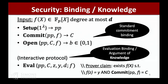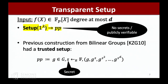The security properties we want are the standard commitment binding property. I won't talk about hiding or zero knowledge in this talk, but you can also achieve that. For the evaluation protocol, there are two different notions. One is a binding property: I cannot evaluate the same commitment at the same point to two different values. The other is a knowledge property, which we will achieve: every time I evaluate the polynomial on any point, it is actually possible to extract the underlying polynomial. We will achieve this argument of knowledge property. And ideally, we want a transparent setup where the setup has no secrets and is publicly verifiable.